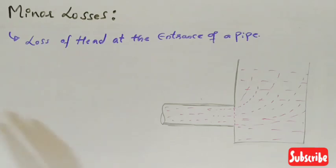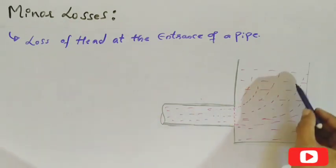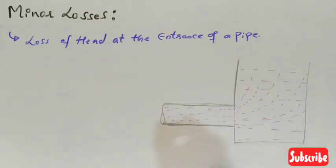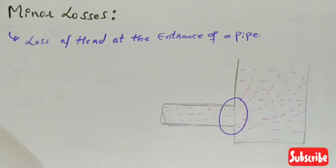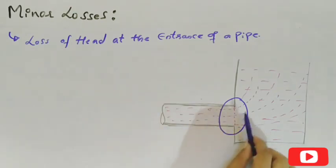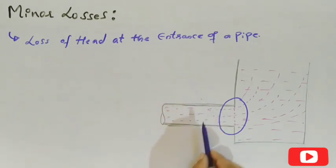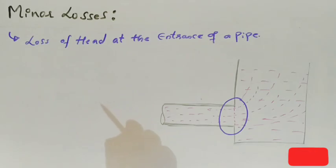Now this is the loss of head at the entrance of a pipe, which is one more type of minor loss. This loss of head or energy is observed when the fluid is entering the pipe which is connected to a large tank. At this entrance section, this loss will be observed. This loss is similar to the loss of head due to sudden contraction, because the large tank has a different size when the fluid enters the pipe — there is a change in diameter.